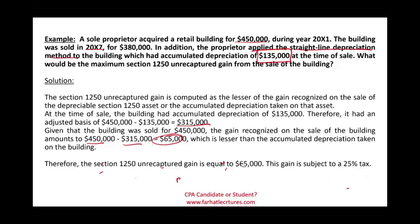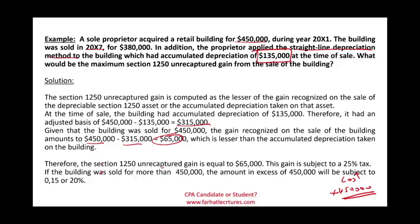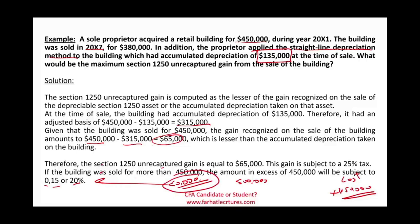What would happen if we sold the building for more than $450,000 — the original cost? Any amount above $450,000 would be an additional gain not subject to the 25% rate; instead it is subject to 0%, 15%, or 20%. For example, if we sold the building for $500,000, then the additional $50,000 above the original cost is subject to 0%, 15%, or 20% depending on the taxpayer's status.